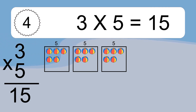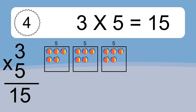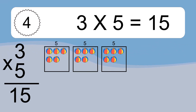3 times 5 equals what? We have 3 boxes, and each box has 5 colorful balls inside. If you count all the balls in all the boxes together, you will have 3 times 5 balls. This equals 15 balls.